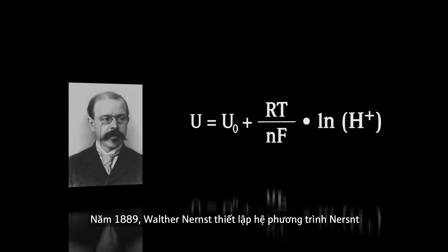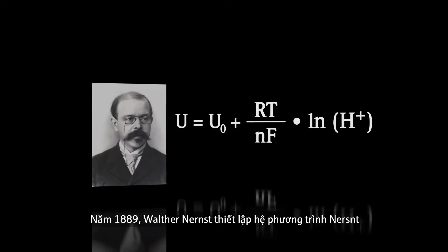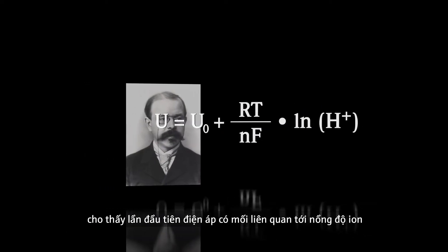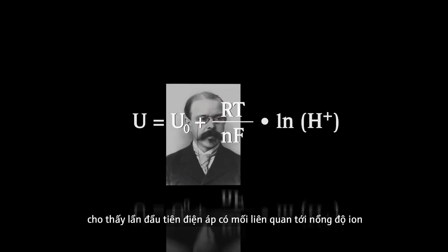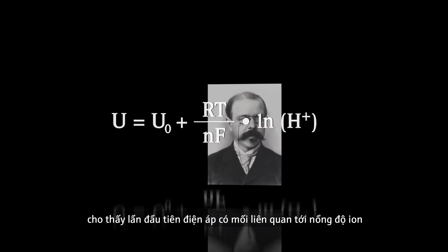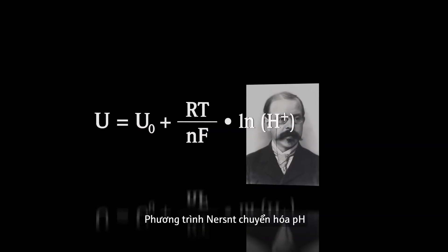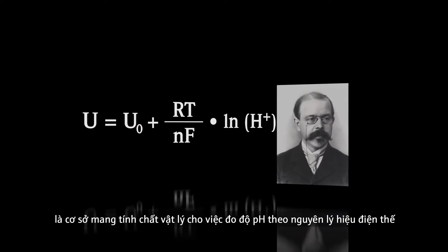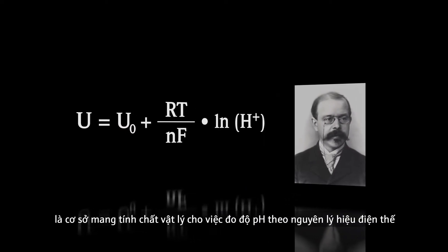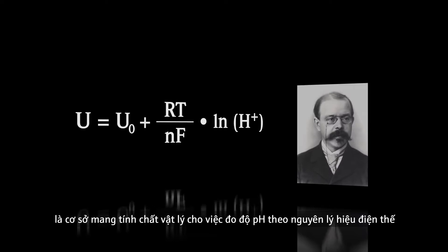In 1889, Walter Nernst formulated the Nernst equation that, for the first time, related electrical voltage to ion concentration. The Nernst equation, derived for pH, is the physical basis for pH measurement according to the potentiometric principle.